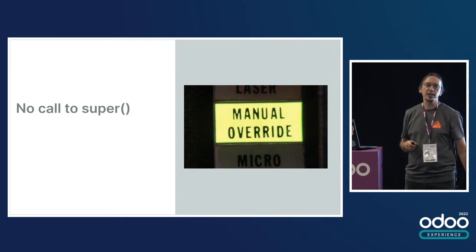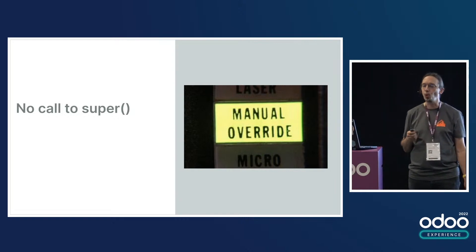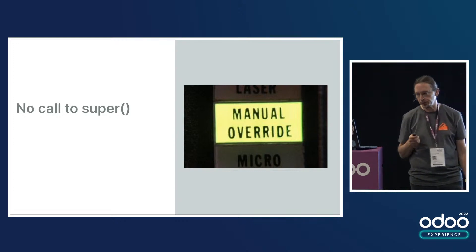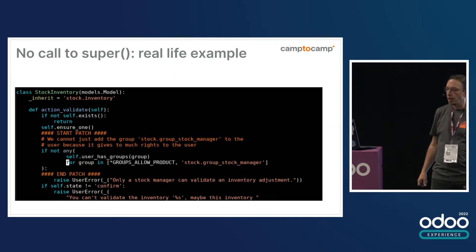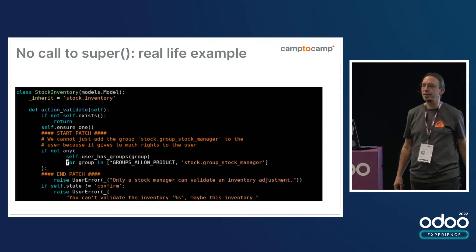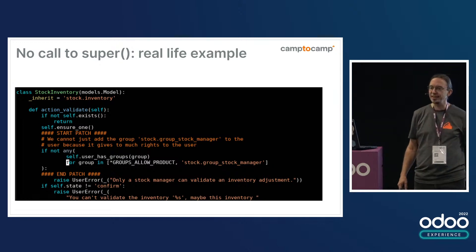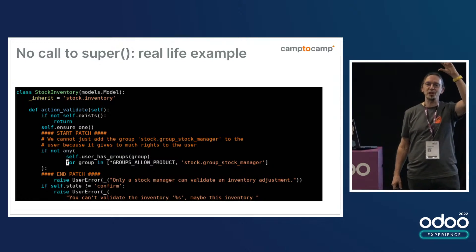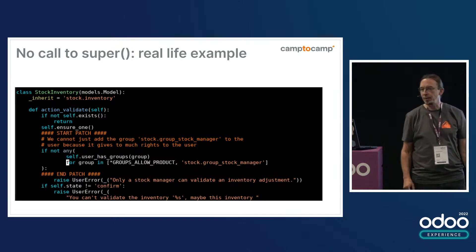The third anti-pattern I see often — too often, way too often — is no call to super. This example comes from the bloated module I mentioned earlier, and it has these nice signature comments: start patch, end patch inside.